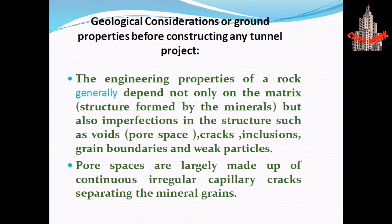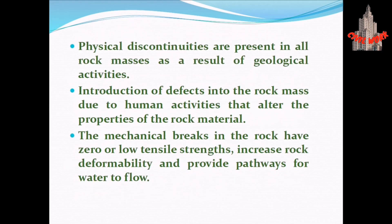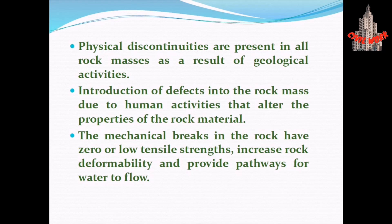Engineering projects in rock generally depend not only on the matrix — the structure formed by minerals, which can be circular, rectangular, or square — but also on imperfections in the structure such as voids, pore spaces, cracks, inclusions, grain boundaries, and weak particles. Pore spaces are largely made up of continuous irregular capillary cracks separating the mineral grains. Physical discontinuities are present in all rock masses as a result of geological activities. Defects introduced due to human activities alter the properties of the rock material. Mechanical breaks in the rock have zero or low tensile strength, increase rock deformability, and provide pathways for water flow.